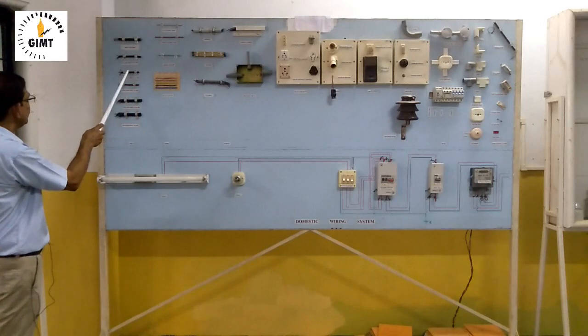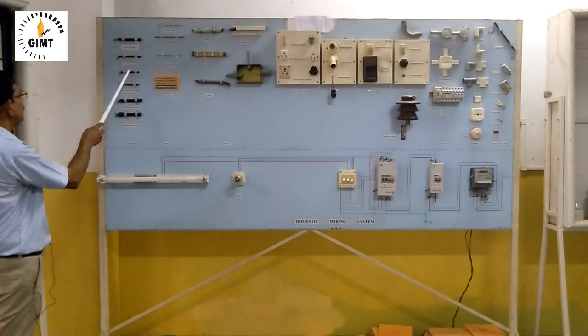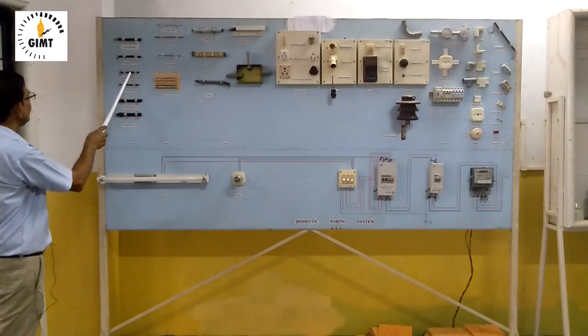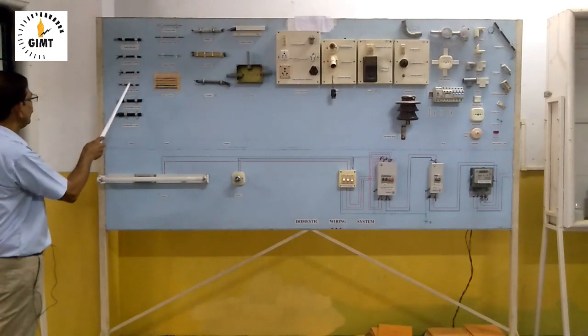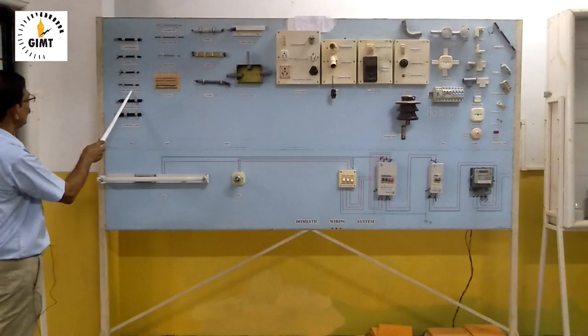But you can see that there are some difference between this and this. What is that? This is little bit bigger one. Means this is the three-core cable of 1.5 square mm. This is three-core cable of 1 square mm.